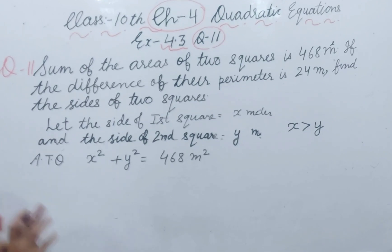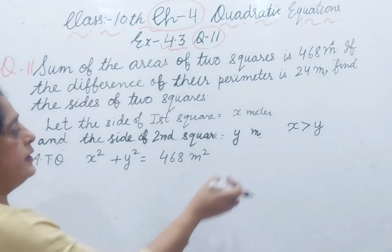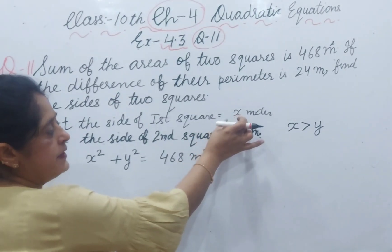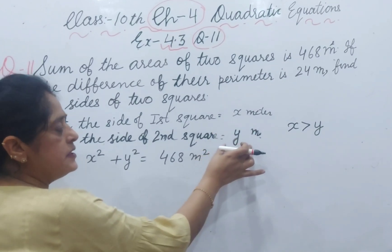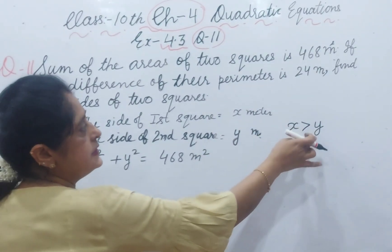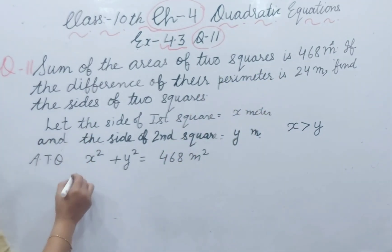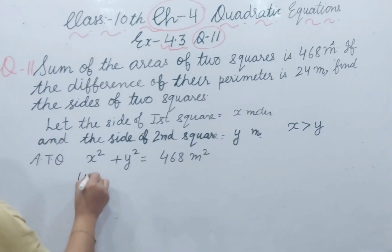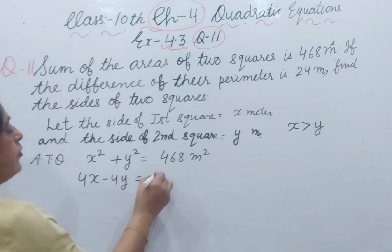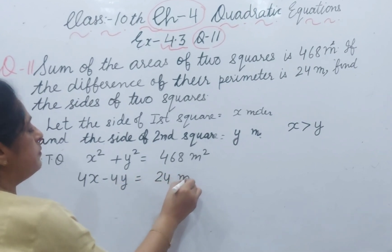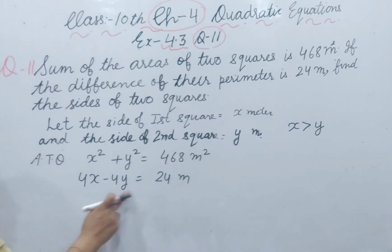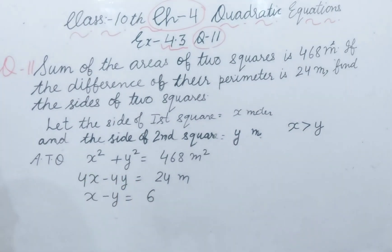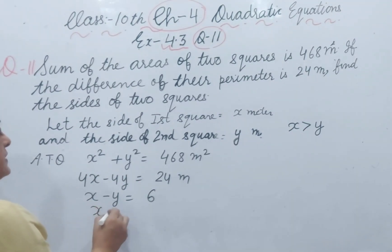Now difference of their perimeter. Perimeter of square is 4 into side. First square perimeter is 4x and second square perimeter is 4y. Because x greater than y, so the second statement will be 4x minus 4y equal to 24 meter. All this equation divided by 4, you will get x minus y equal to 6 and x is equal to 6 plus y.